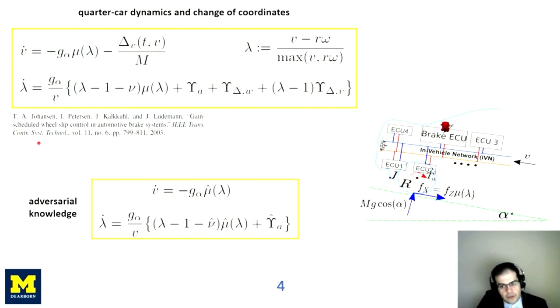To answer this question, we need to consider the traction dynamics of the vehicle, which is described by the dynamics of the forward speed of the vehicle, V dot, and the dynamics of the wheel slip, which is lambda dot. As you can see from this dynamical equation, the speed dynamics depend on the slope of the road alpha. It depends on the friction coefficient of the tire road interaction, which is the function mu lambda, and some unknown disturbances delta v acting on the speed dynamics, such as wind gusts.